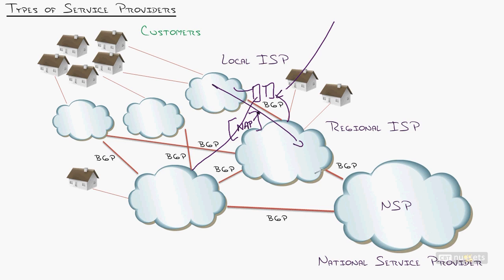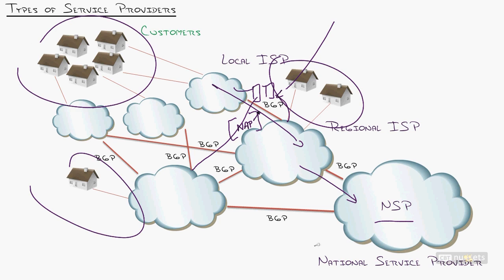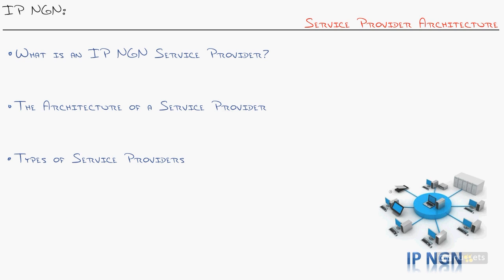Regional ISPs eventually link up to national service providers — the behemoths, the giants that you can't really touch unless you get to that regional ISP level — which then provide international, coast-to-coast connectivity. These are usually very expensive connections to link up to. Usually a national service provider does not link to customers directly — they are a carrier of carriers. The regional ISP has its own residential customers, and the local ISP has their residential customers. The national carrier is just bridging the carriers together. I'm hoping this gives you that big picture view of the architecture of a service provider.